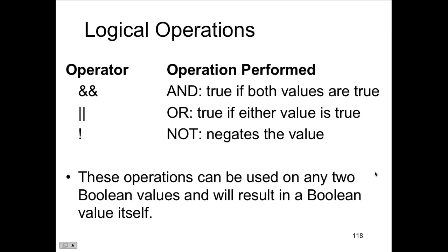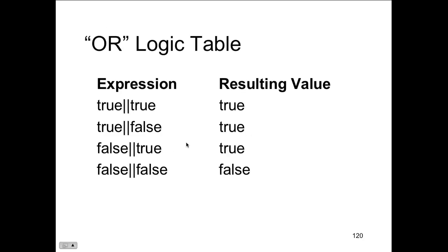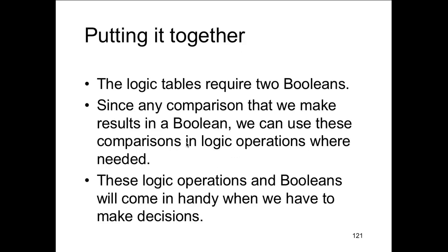Here's the truth table: true AND true is true; false AND anything is false; true AND false is false. But true AND true is true. For OR: true OR true is true, and true OR false gives you more trues — because one or the other, it doesn't matter which. The logical operators and Booleans come in handy when we have to make decisions. When do we make decisions? When we use if statements.